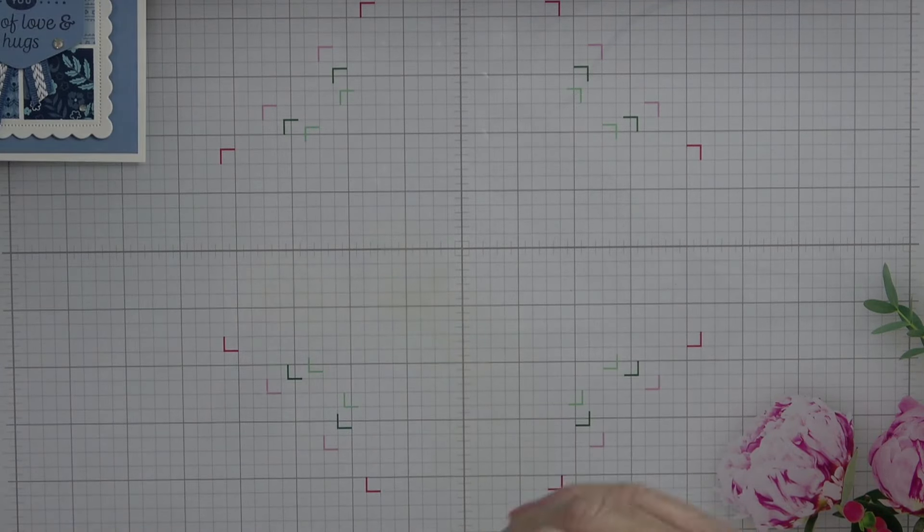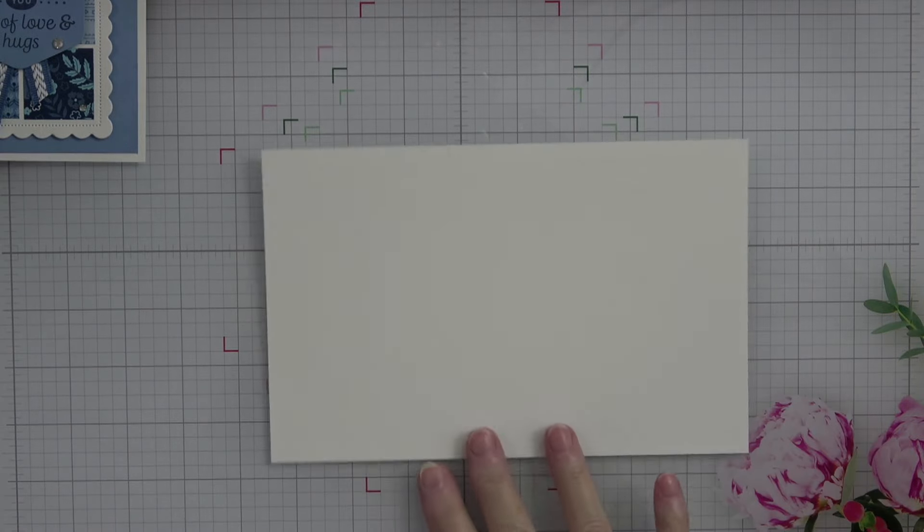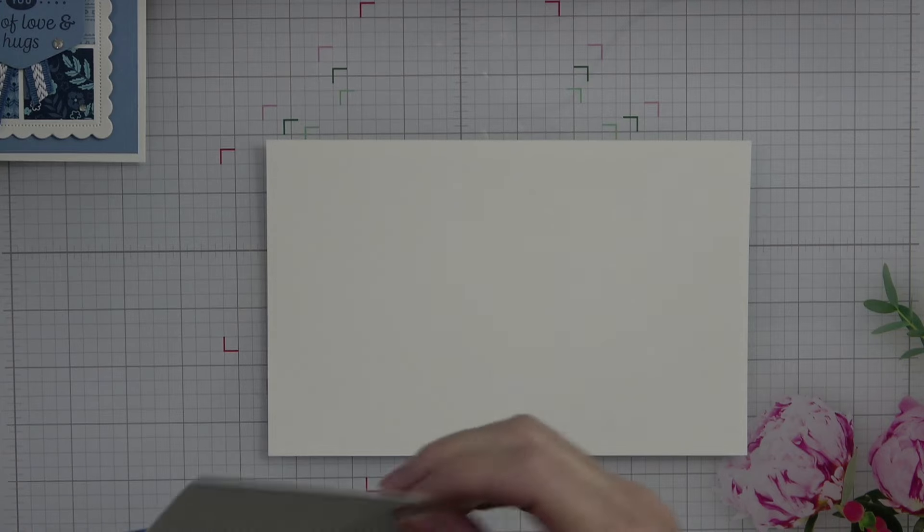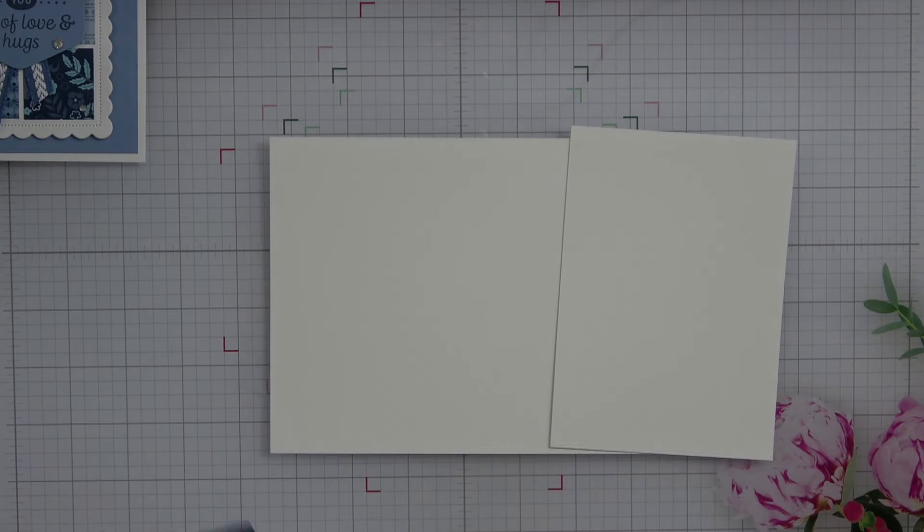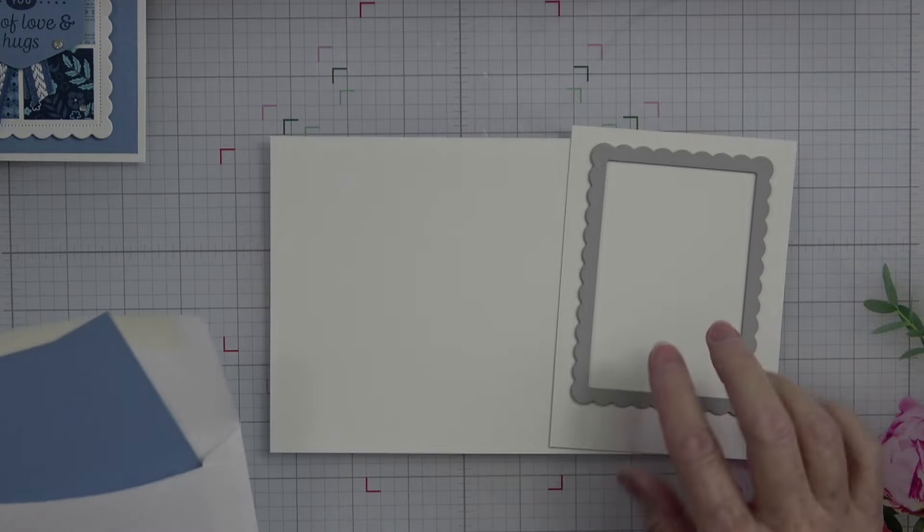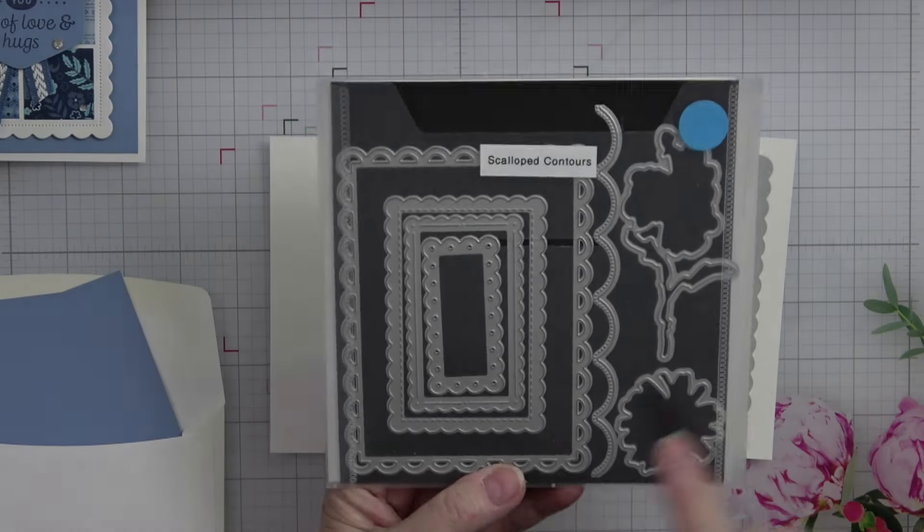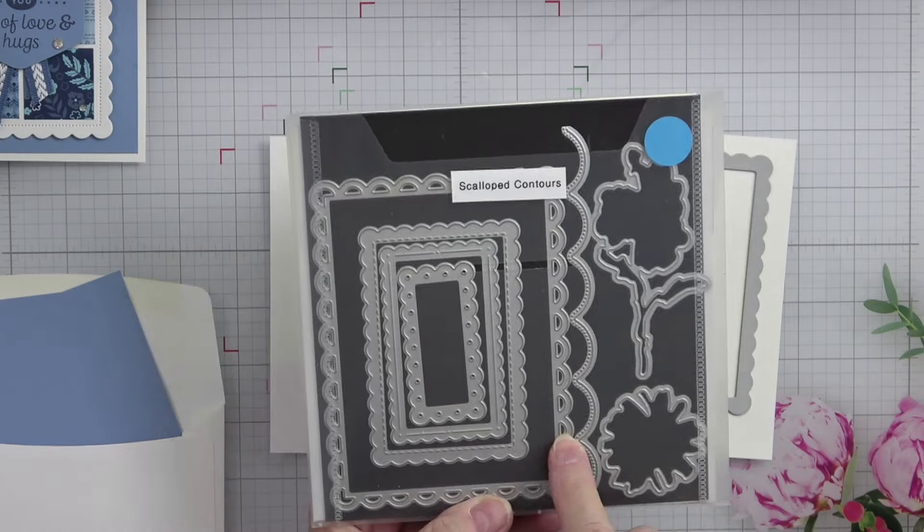So let's go ahead and get started. The first thing we're going to do is we're going to need a card base and actually it's a white thick basic white thick card base. We're going to need another piece of white to cut out our frame and this comes from the scalloped contour dies and I use next to the largest rectangle scallop.